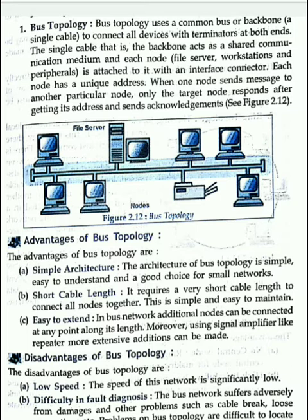Depending on the topology, computer networks are also classified. One network may use one topology, and another network may use another topology according to requirements. The different topologies are: bus topology, star topology, ring topology, tree topology, mesh topology, and hybrid topology.